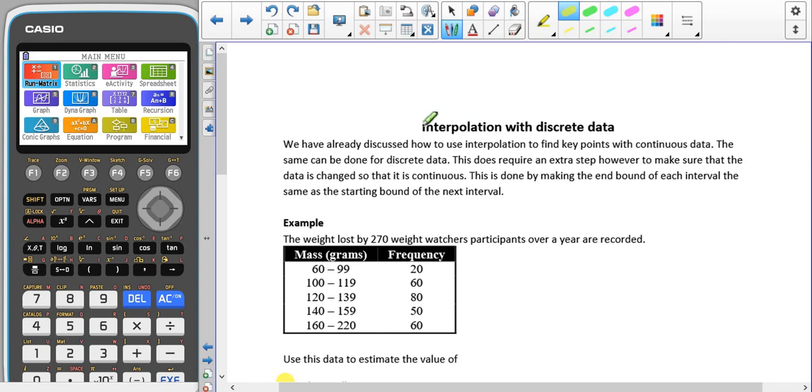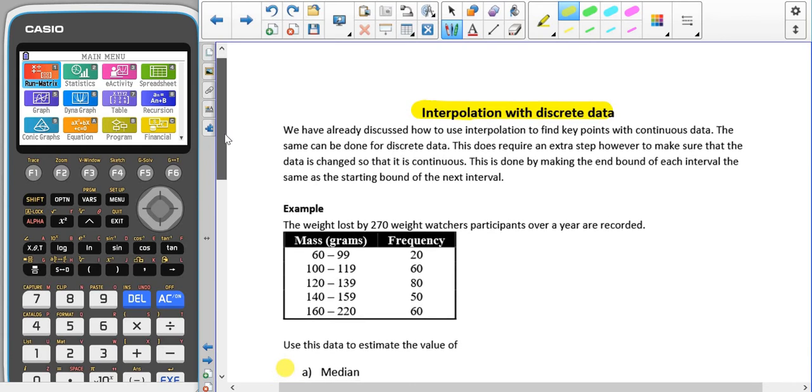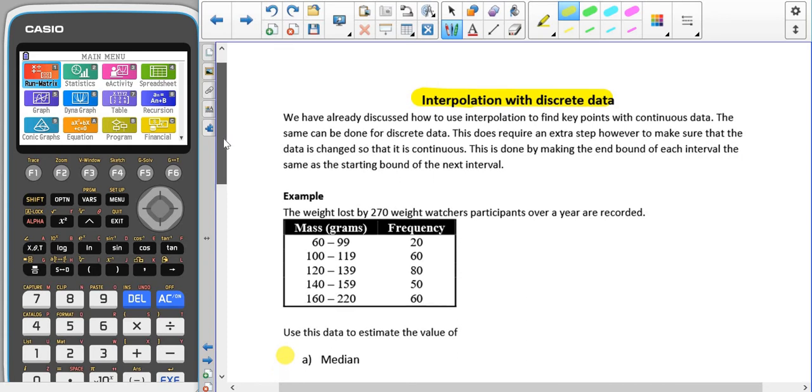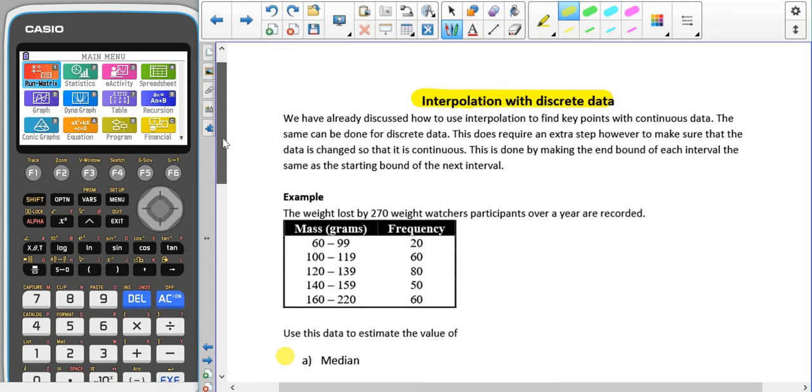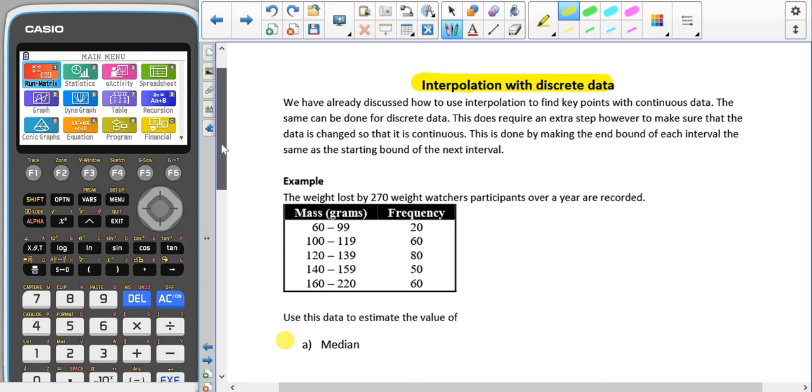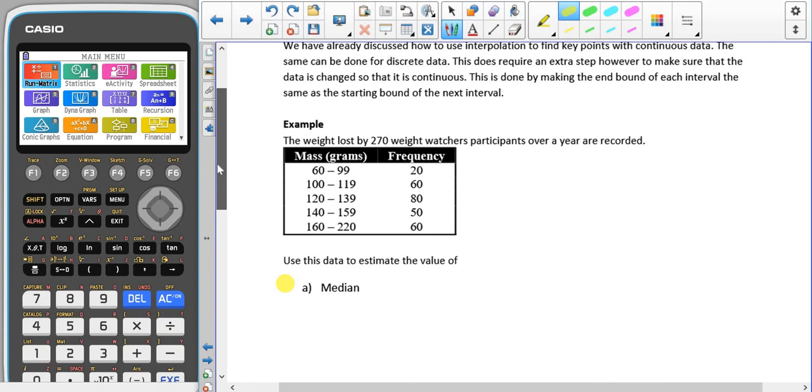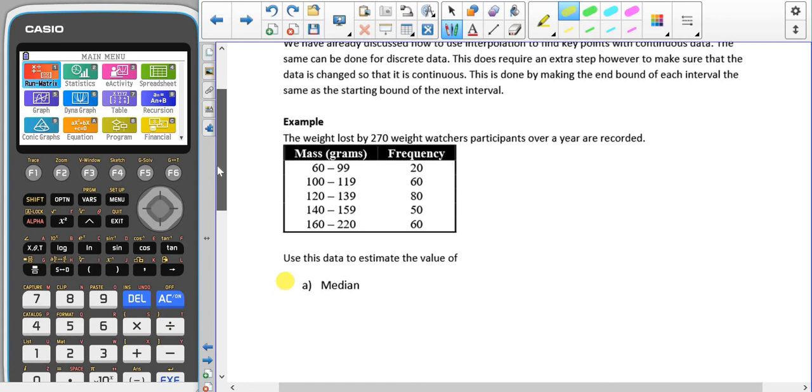So now that we've talked about the difference between discrete and continuous data in the different types of data, we're going to have a look at interpolation again. Remember that this is used to find the median or lower quartile or upper quartile, but this time using discrete data.